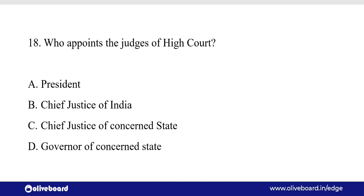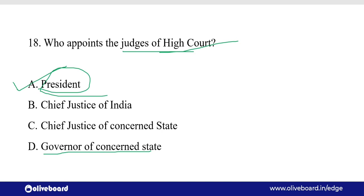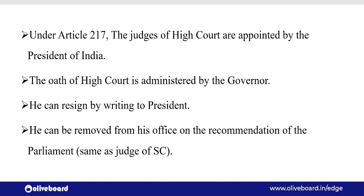Who appoints the judges of High Court? Judges — High Court के हो या Supreme Court के हो — उनको appoint करता है President। लेकिन High Court के judges को जो oath दिलाता है यानि कि उनके oath को administer करता है, वो होता है Governor of the concerned state। इसके अलावा Supreme Court के judges को जो oath दिलाता है वो होता है President of India। Judges of High Court are appointed by the president — यह Article 217 में लिखा है।